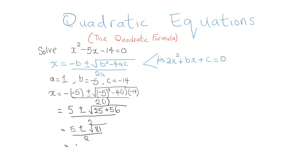So this is equal to 5 plus or minus. The square root of 81 is 9. So this is where the plus or minus is going to come into effect.